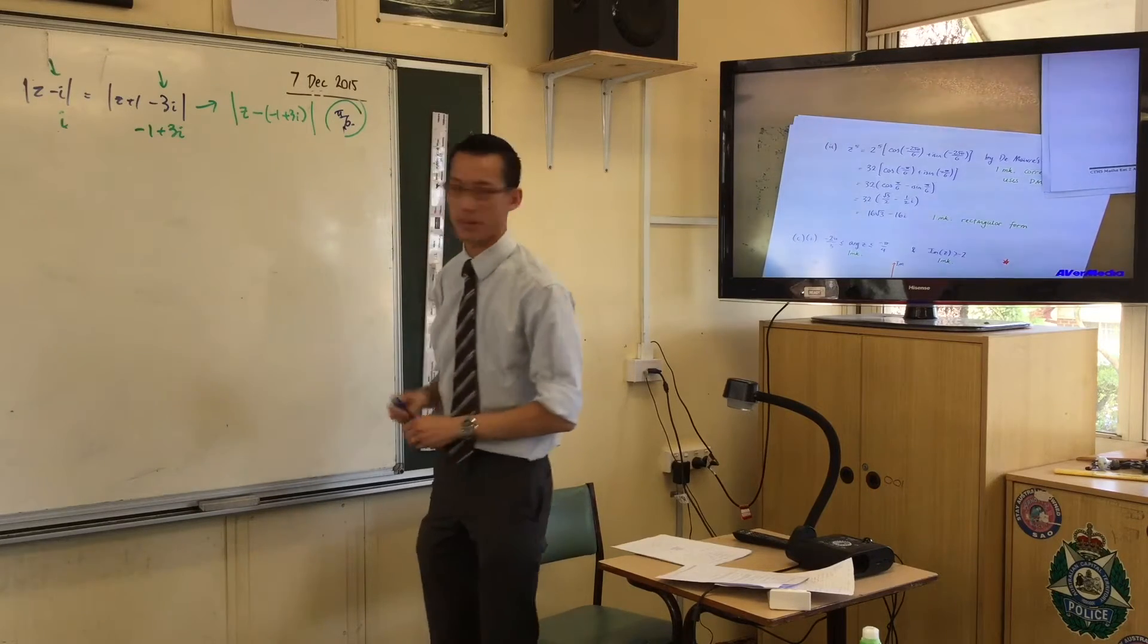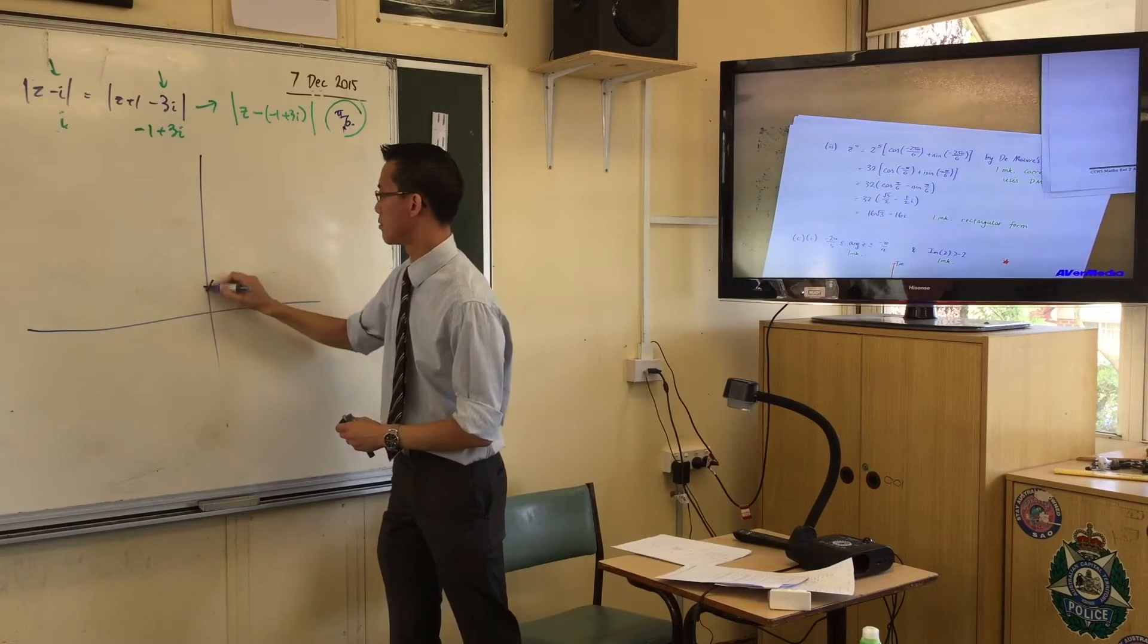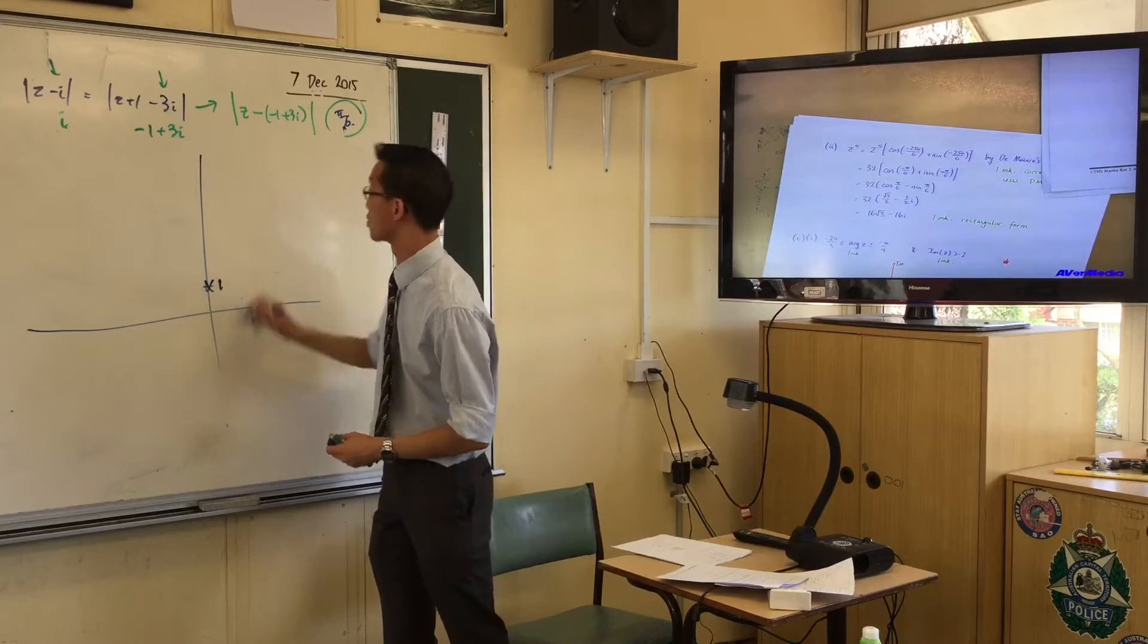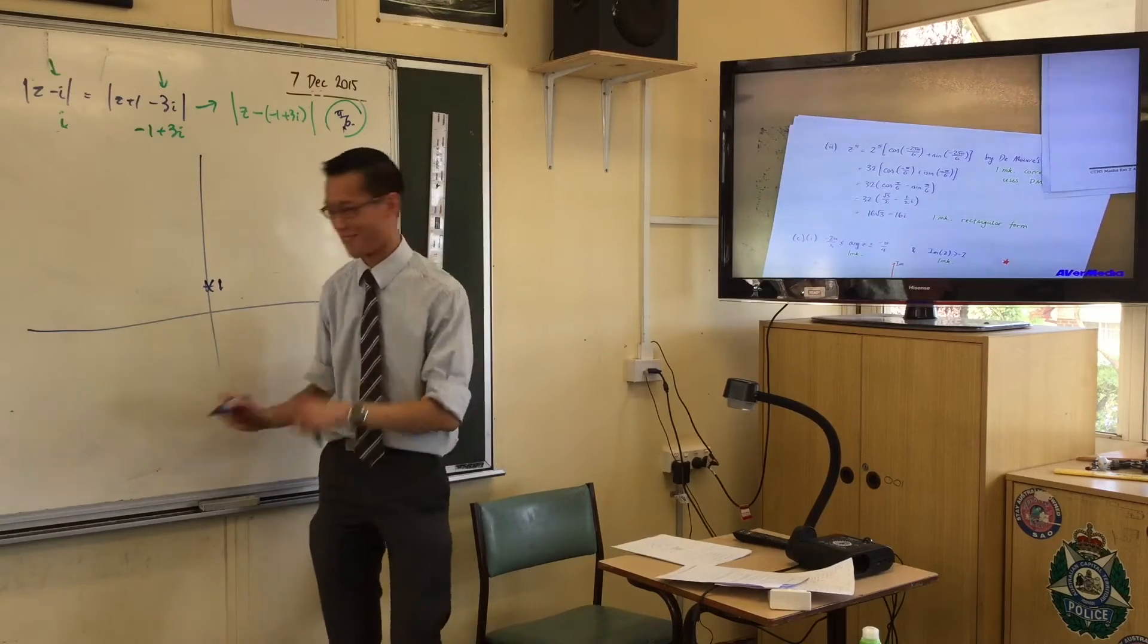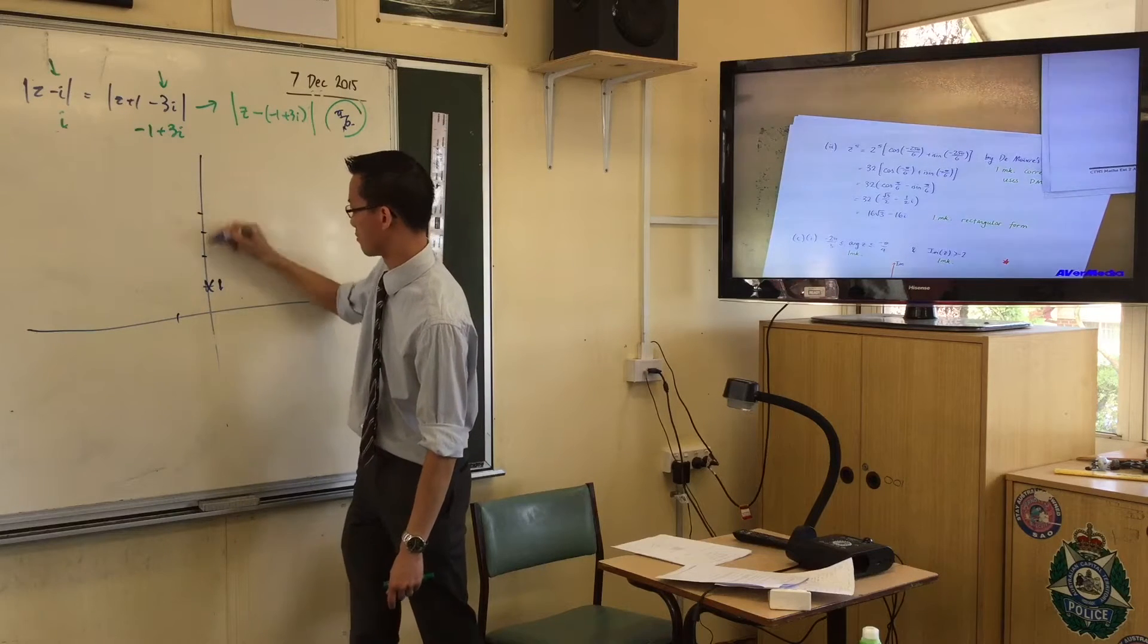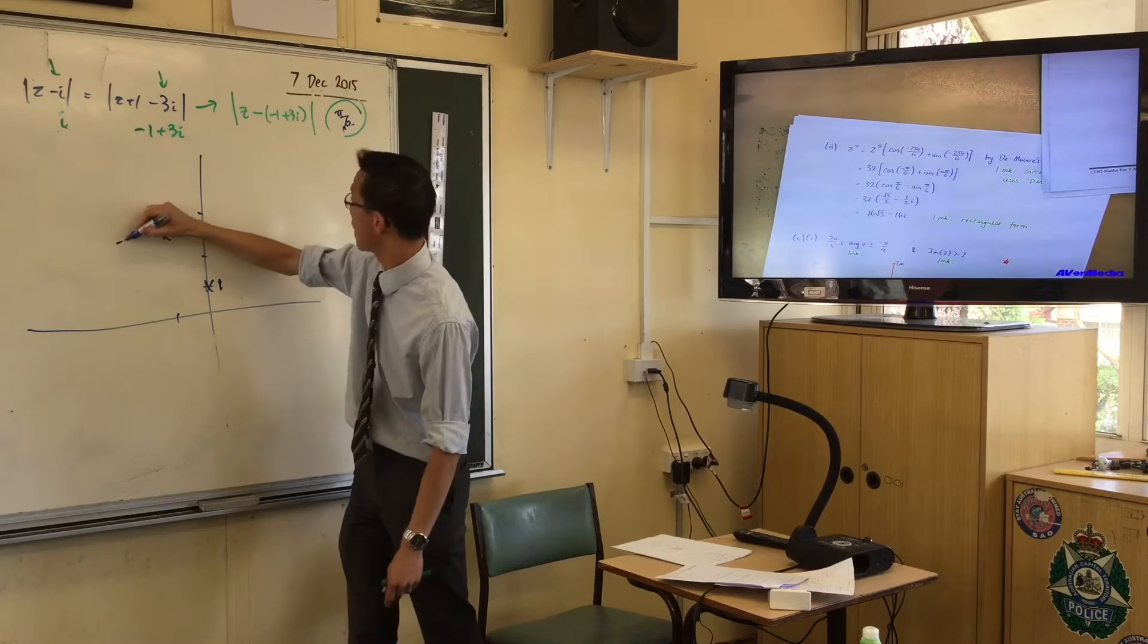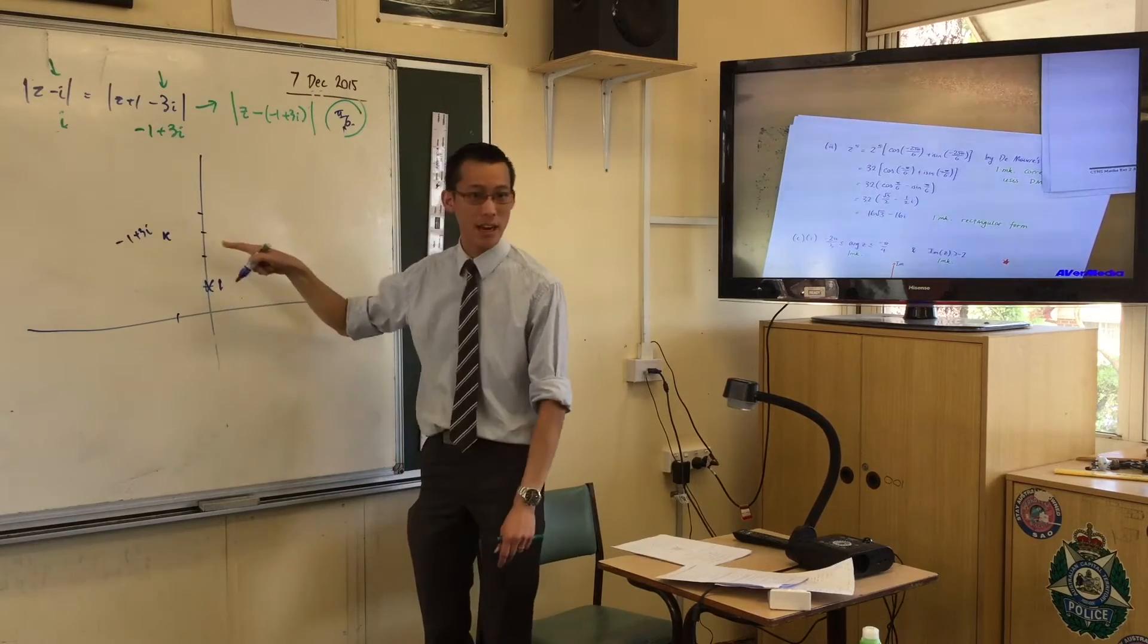So being that you're comparing to those two points, all you needed to say was where's i, put i there, which is actually just 1, where's minus 1 plus 3i. Minus 1's real, so you go this way, then you go 1, 2, 3. There's minus 1 plus 3i, and you want all of the points that are equidistant to these guys.